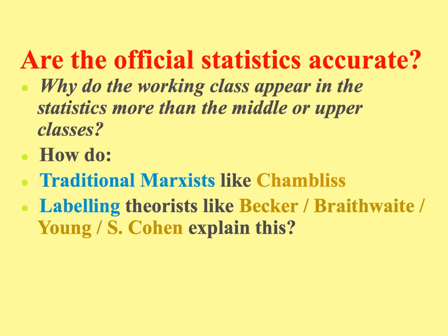The other side of the argument is to question whether the official statistics are actually accurate. You could make an essay arguing that yes, working class people commit more crime. However, the other side of the argument is why do they actually appear in statistics more than middle or upper classes? Here you want to consider the ideas of traditional Marxists like Chambliss, possibly even Lauren Schneider. Remember Chambliss's study on the saints and the roughnecks — although useful for labelling theory, it also helps demonstrate why working class people are much more likely, when they encounter the law, to actually be arrested and convicted.